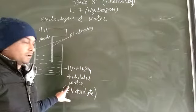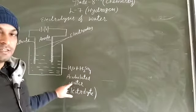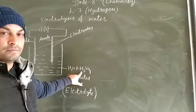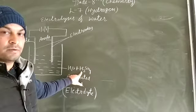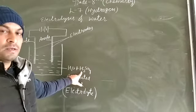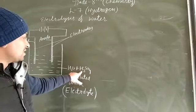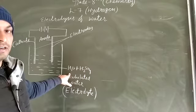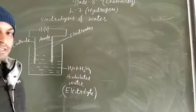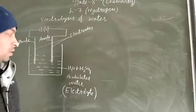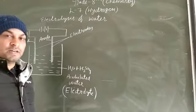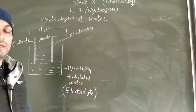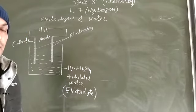That is acidulated water. What is acidulated water? It is water which is mixed with a few drops of acid — that is known as acidulated water. Why are we doing this? We are mixing acid with the water just to make it a better conductor of electricity. Although water itself is a conductor of electricity, it is not a very good conductor. To make it a good conductor we are adding a few drops of sulphuric acid.